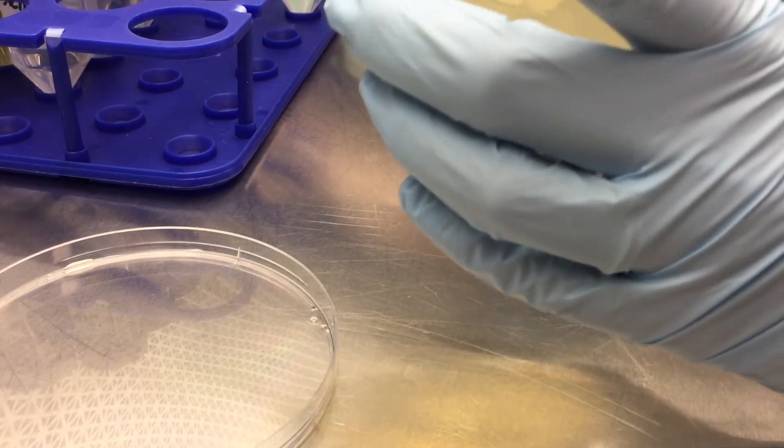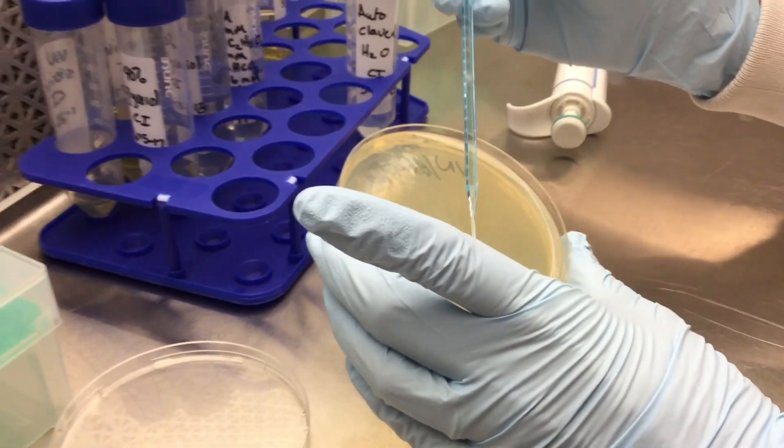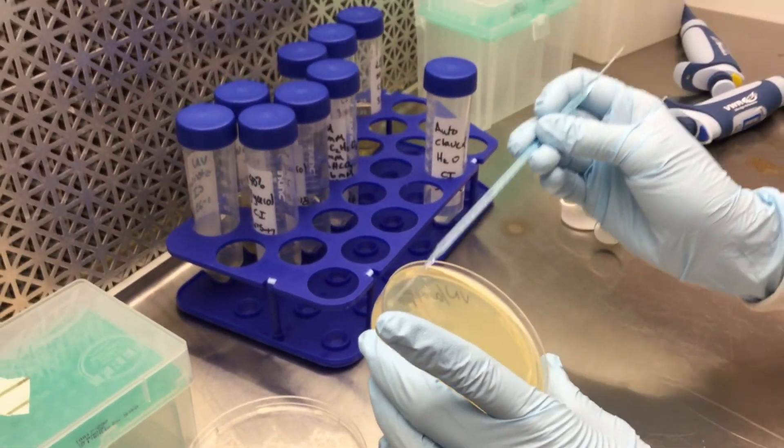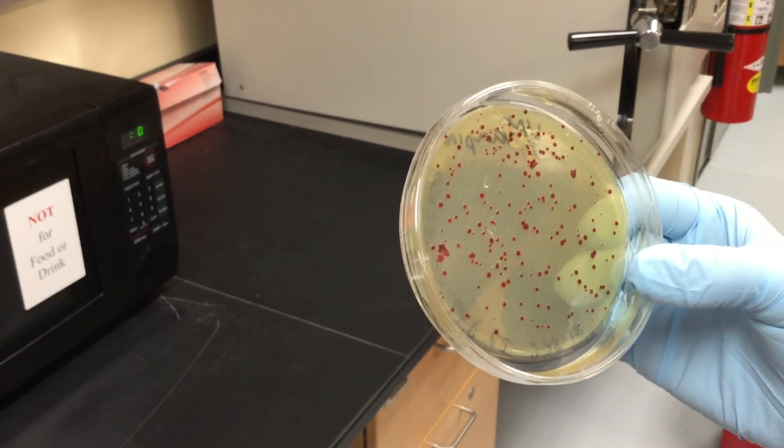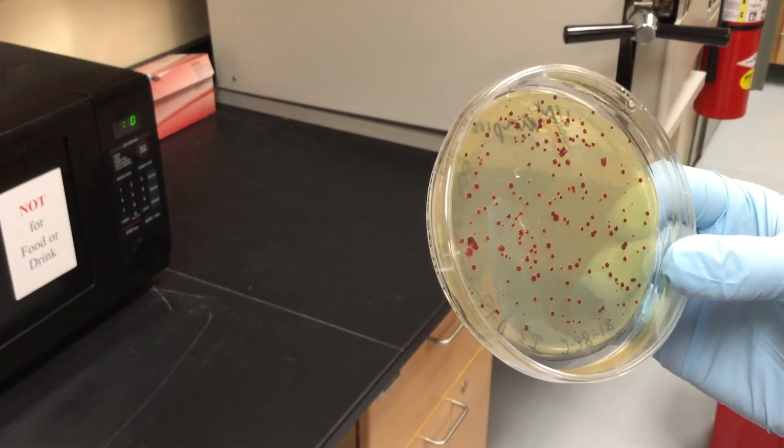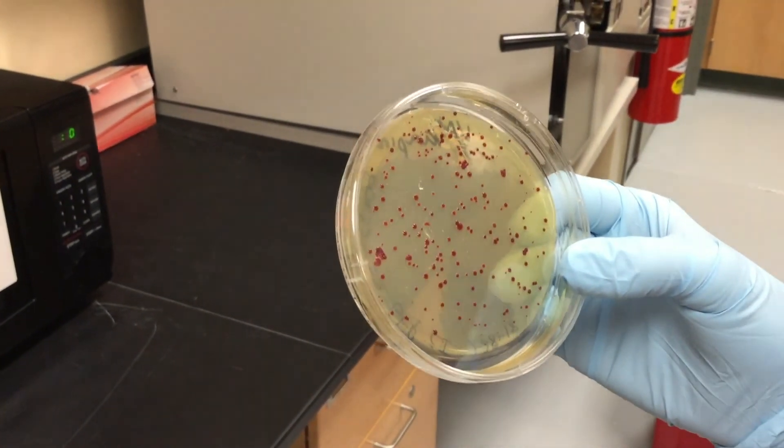We like that organism because it can use a variety of different sugars found in corn fiber, and it will then convert that low-value product into a high-value product, which is called succinate. Succinate can be used for all kinds of things, including bioplastics and a variety of chemicals. Actinobacillus succinogenes naturally produces a lot of succinate.